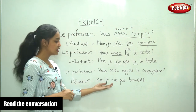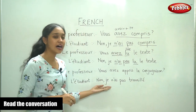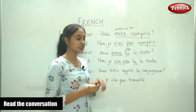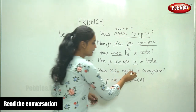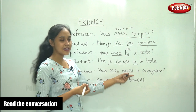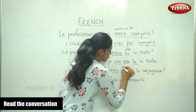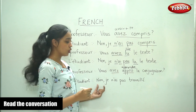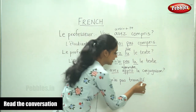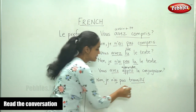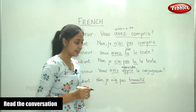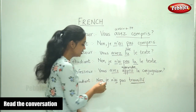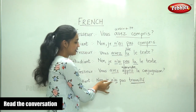'Je n'ai pas travaillé.' I have not worked. I did not work. 'Vous avez appris la conjugaison?' This is avoir plus the past participle — this is the past participle of the verb apprendre. Now the student says no: 'Je n'ai pas travaillé.' This is avoir plus the past participle of the verb travailler. It is an ER verb, so we replace ER with É. And since the sentence is negative, we add ne and pas.